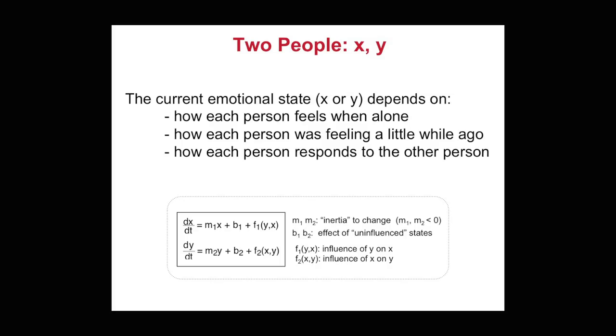So what we've been doing is to see what sort of very simple model — the simplest model we can make — of a conflict. We start with a model with only two people, and the variables are their emotional state: how happy or unhappy they are. We say that the current emotional state of each person depends on how that person feels when they're alone, how each person was feeling a little while ago, and how each person responds to the other person.